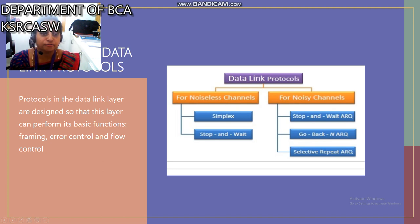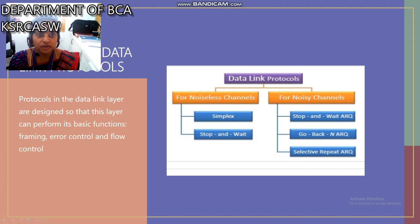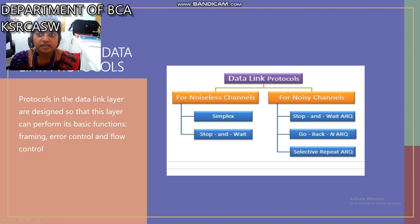Next, data link protocols. Protocols in the data link layer are designed so that this layer can perform its basic functions: framing, error control, and flow control. These data link protocols have two types — first, noiseless channel, and second, noisy channel. In the noiseless channel we have simplex stop-and-wait, and in the noisy channel we have stop-and-wait, go-back-N, and selective repeat.